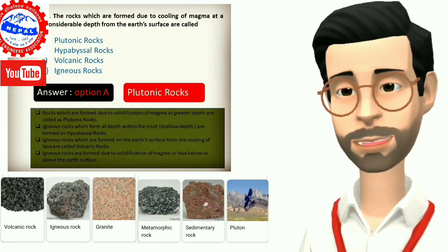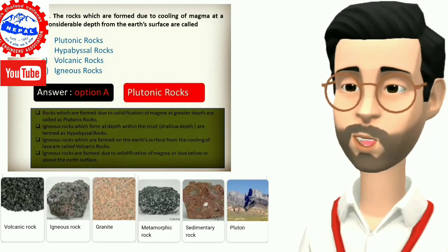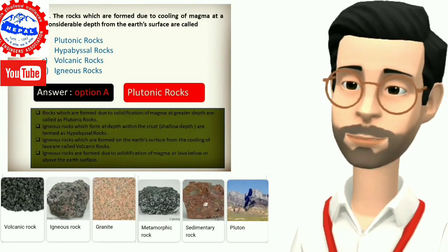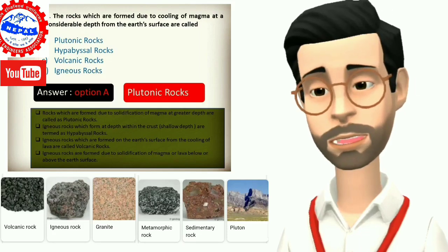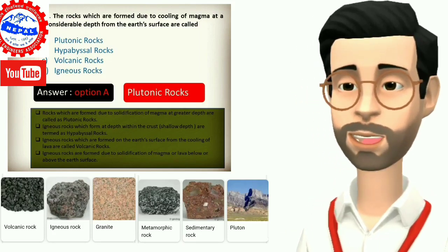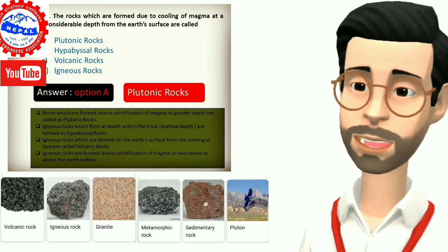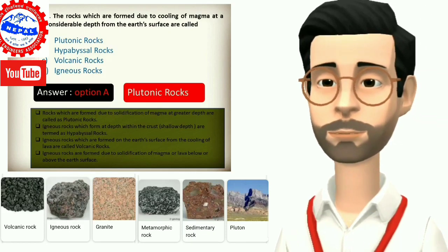Two, the rocks which are formed due to cooling of magma at a considerable depth from the earth's surface are called: A) plutonic rocks, B) hypabyssal rocks, C) volcanic rocks, D) igneous rocks. Answer is option A, plutonic rocks.